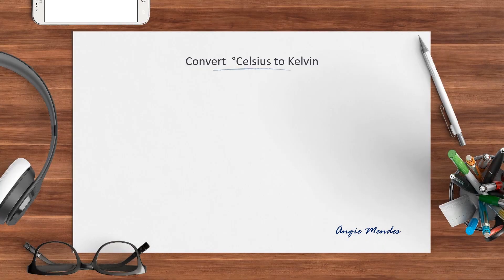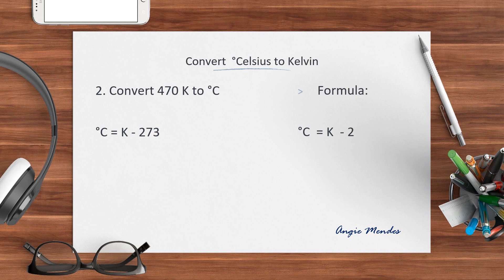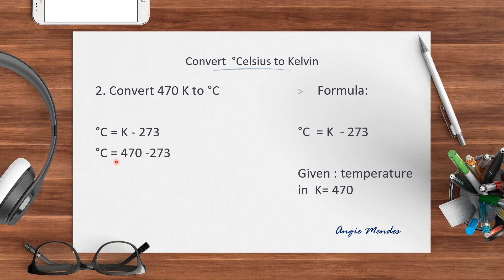Let's take another example where we have to convert 470 Kelvin to degree Celsius. So let's use the formula: degree Celsius is equal to Kelvin minus 273. The temperature given in Kelvin is 470. Substituting the value in the formula, we get degree Celsius equals to 470 minus 273, which gives us 197 degree Celsius.